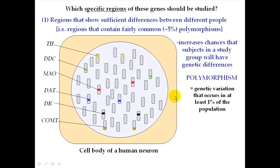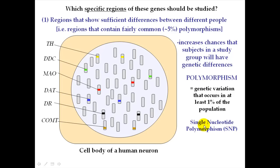It turns out there are different types of genetic variations and different types of polymorphisms. One type is called a single nucleotide polymorphism, or SNP. You're going to see this term referenced quite a few times in your assignment. A single nucleotide polymorphism is whenever you have a genetic variation between two people where what causes the difference is just a change in one single nucleotide.